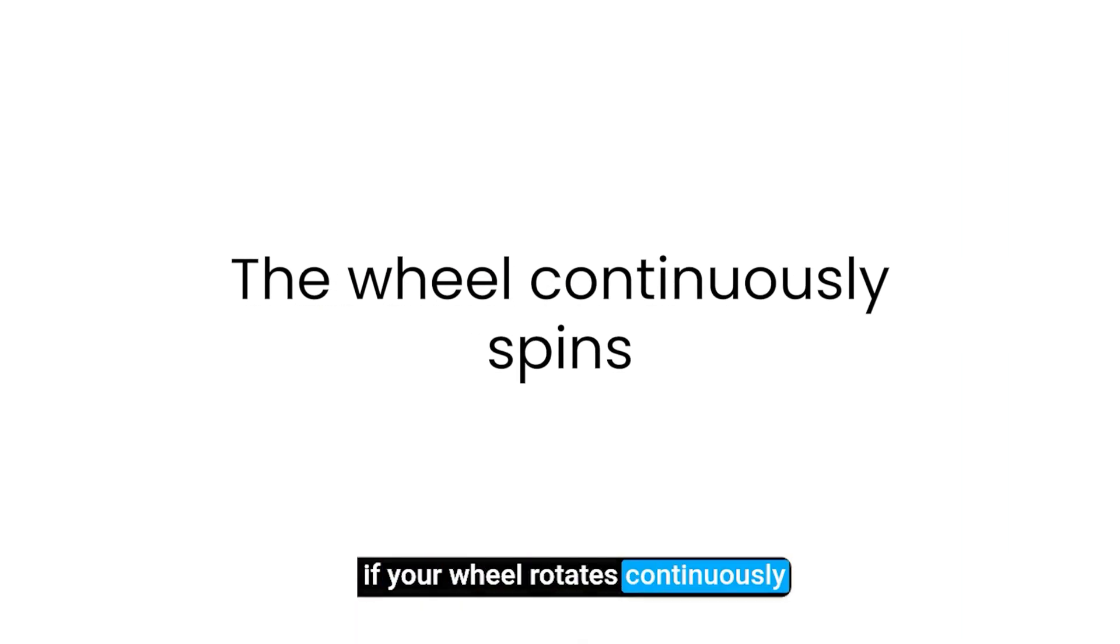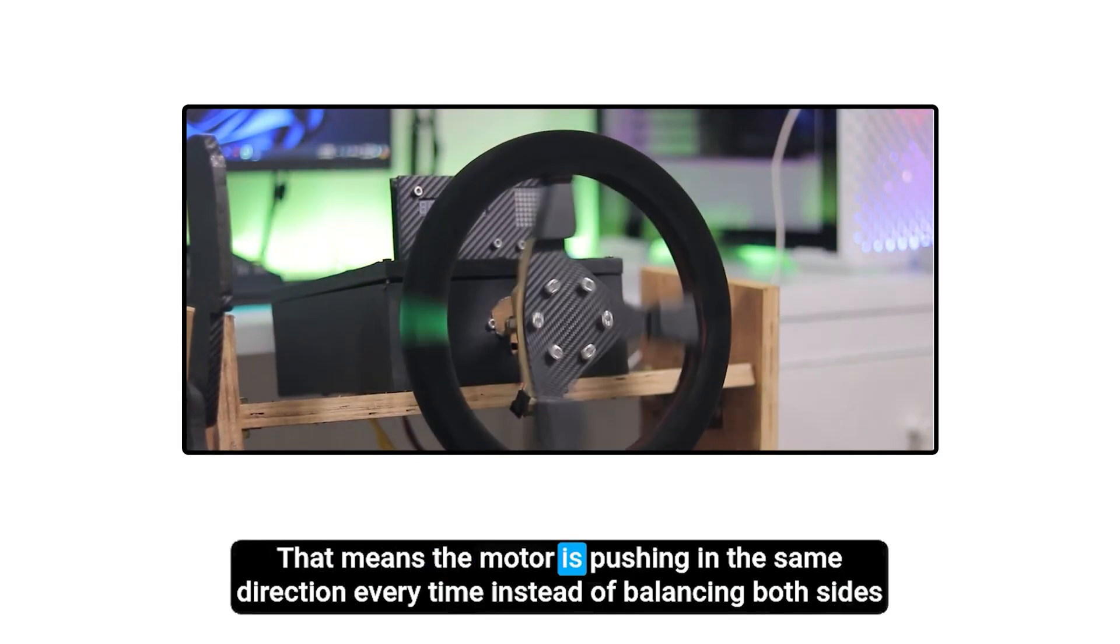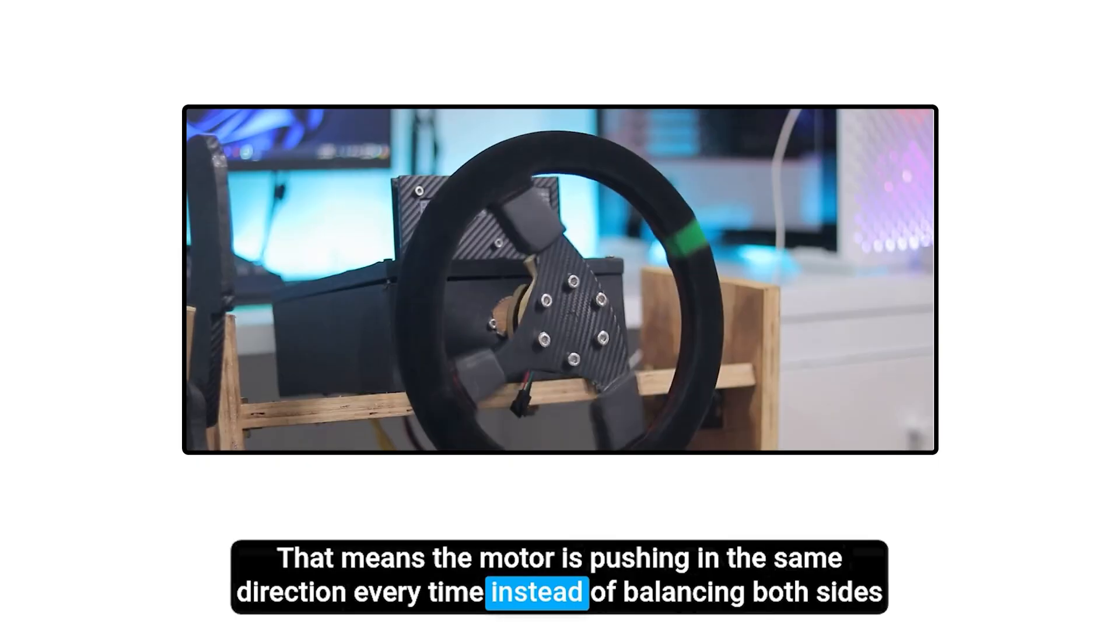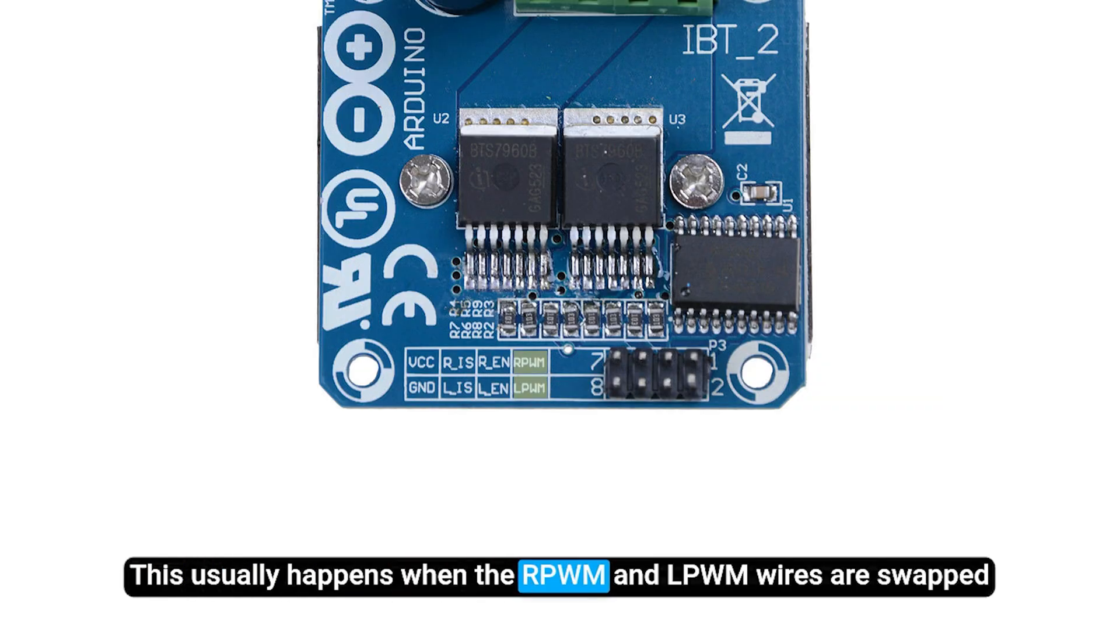If your wheel rotates continuously, the force feedback direction is wrong. That means the motor is pushing in the same direction every time instead of balancing both sides. This usually happens when the RPWM and LPWM wires are swapped.